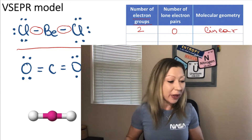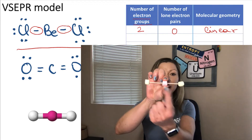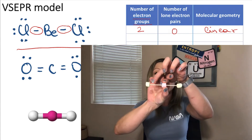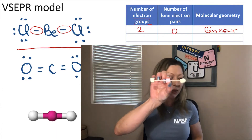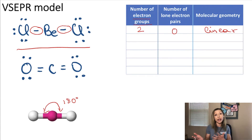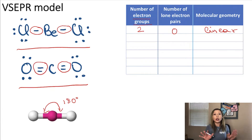We can also use marshmallows to show the linear geometry — the beryllium atom and the two chlorine atoms on the sides. The bond angle between the two toothpicks is 180 degrees, so we note that the bond angle in a linear structure is 180 degrees. It doesn't matter whether we have a single bond or a double bond — we still have two electron groups. For example, in carbon dioxide, there's a double bond on each side and no lone electron pairs. So beryllium dichloride and carbon dioxide both have the same linear molecular geometry.